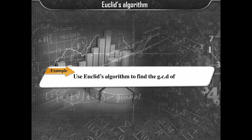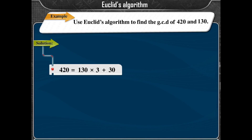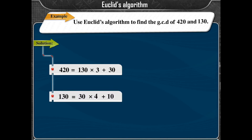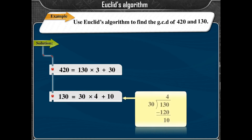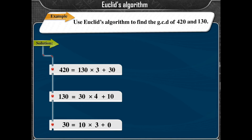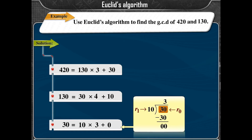Example: Use Euclid's algorithm to find GCD of 420 and 130. Solution: 420 = 130×3 + 30, where A = 420, B = 130, Q0 = 3, R0 = 30. Then 130 = 30×4 + 10, where Q1 = 4, R1 = 10. Then 30 = 10×3 + 0, where Q2 = 3, R2 = 0.